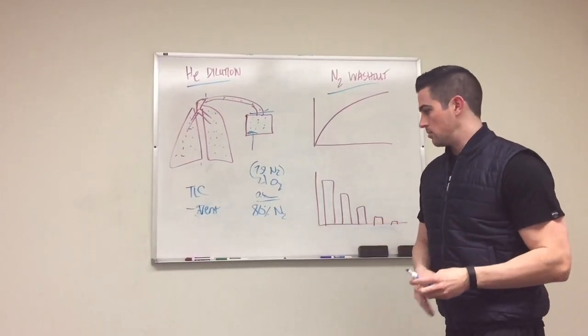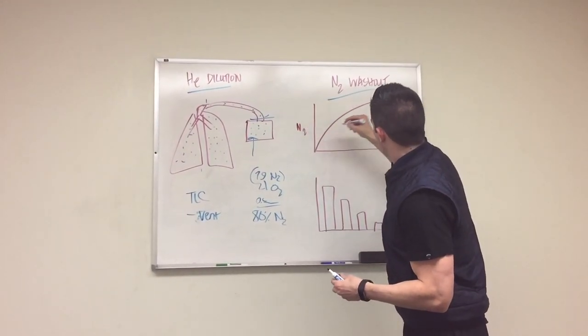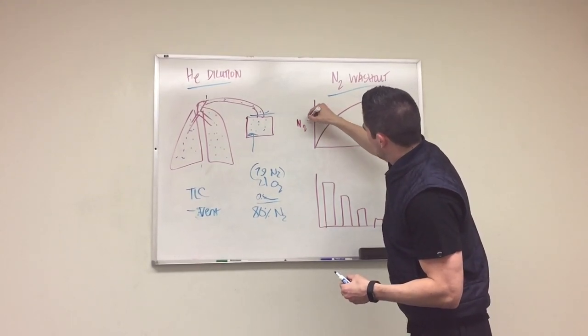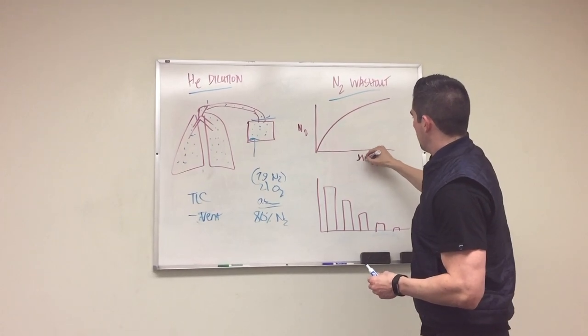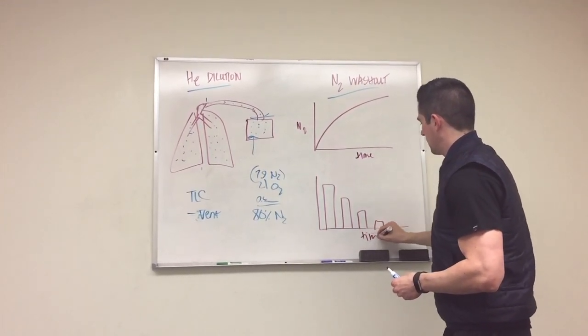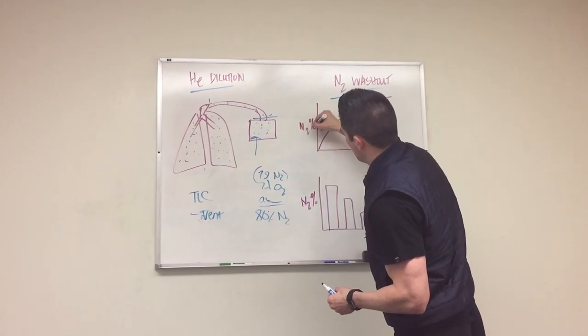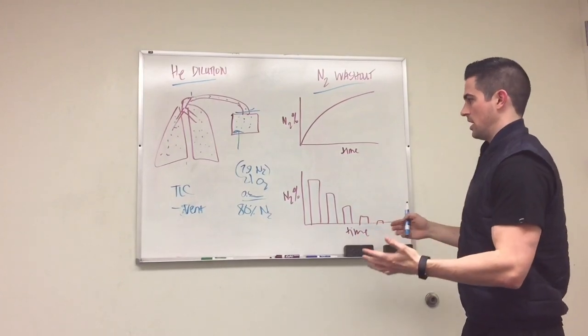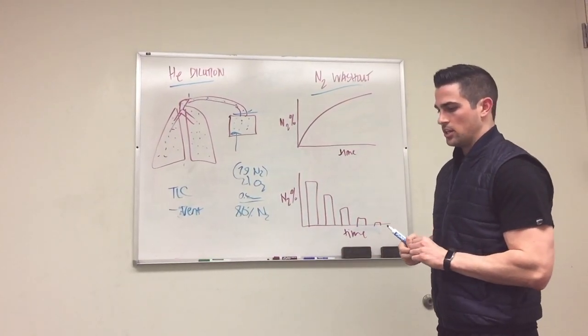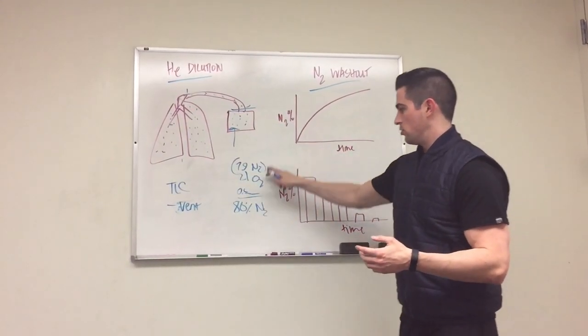And like most graphs, I probably should label this. This will be N2 concentration. This will be time. This will be time. And this will be N2 concentration, or percentage. Percentage of N2. And so we assume that we have 80% nitrogen in our system right now. And what they do is they let you breathe normally, that room air, which this is room air.